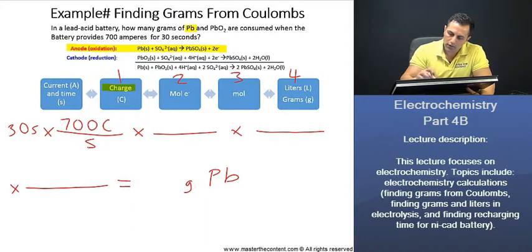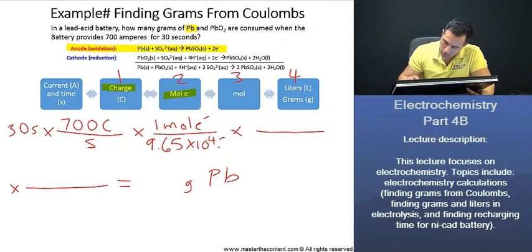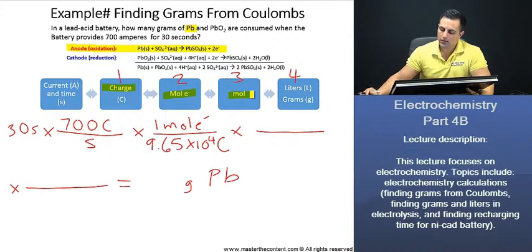Now, we need to get into moles of electron. Well, one mole of electron, we just demonstrated on the previous slide, is going to be 9.65 times 10 to the 4 coulombs. Now, we need to get moles. For our lead here, per mole of lead, we have two moles of electrons.